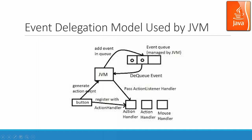When we click a button, it generates an action event and sends it to the Java Virtual Machine. The JVM adds the event object to the event queue, then processes it one by one. When it processes an event, it dequeues that event, finds out the event type, and passes it to the proper action handler. Because the button is already associated with a certain action handler, that event gets passed to that handler. This is called the event delegation model — based on an event queue, processing events one by one.